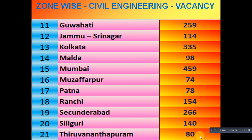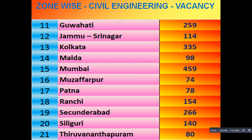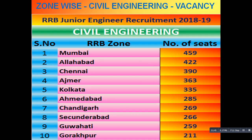This is what I have told you about in alphabetical order. Now the more vacancy — the most vacancies are in the most famous RRB zones. The most vacancies in civil engineering are in Mumbai: 459. In second number, Allahabad: 422. And in Chennai: 390.